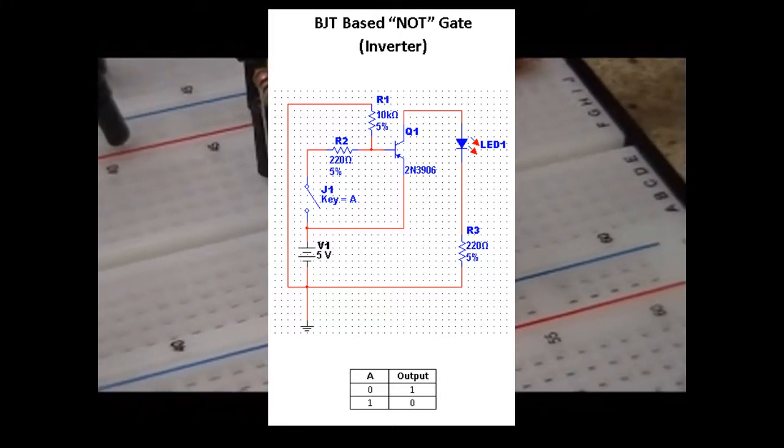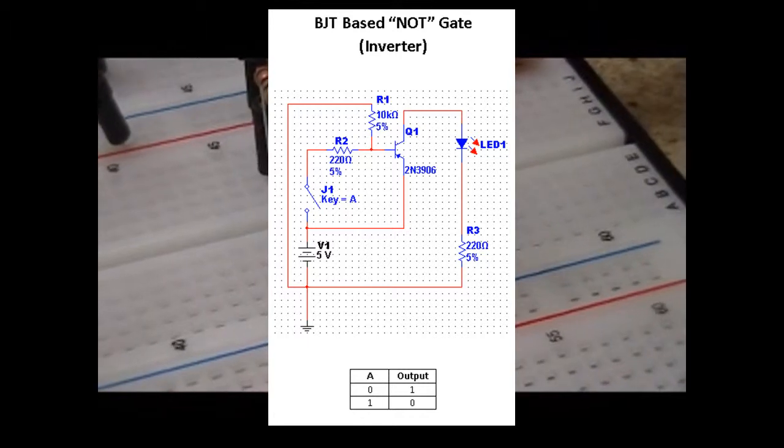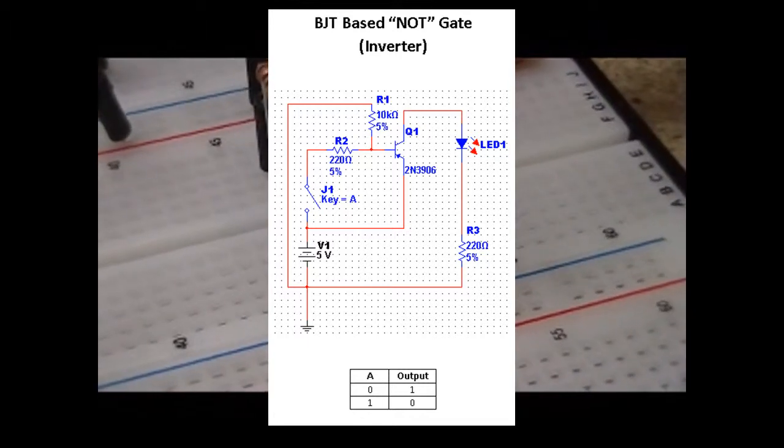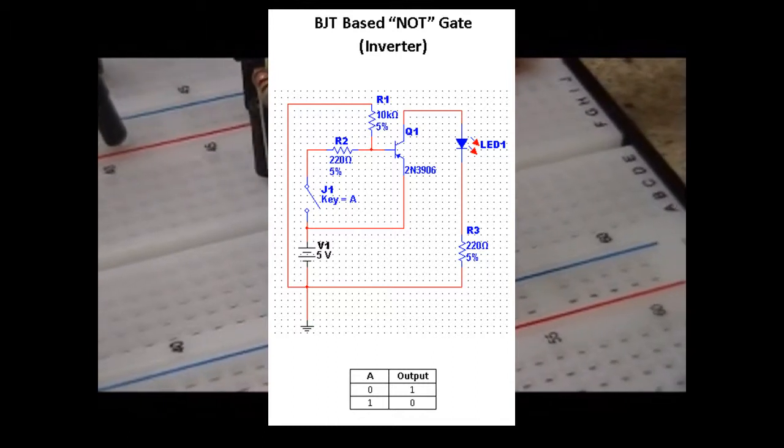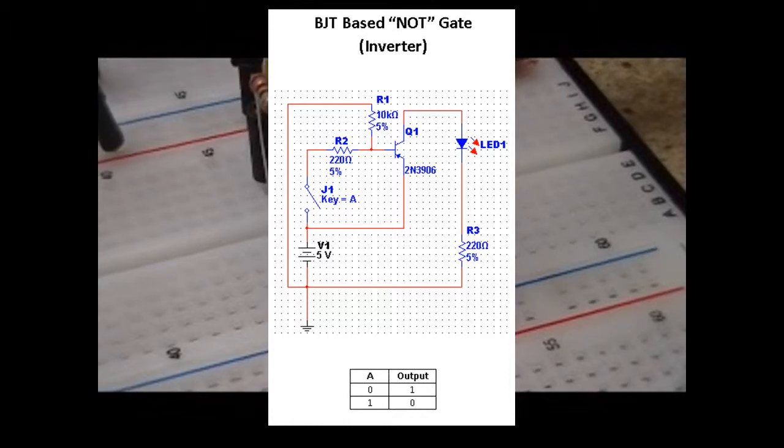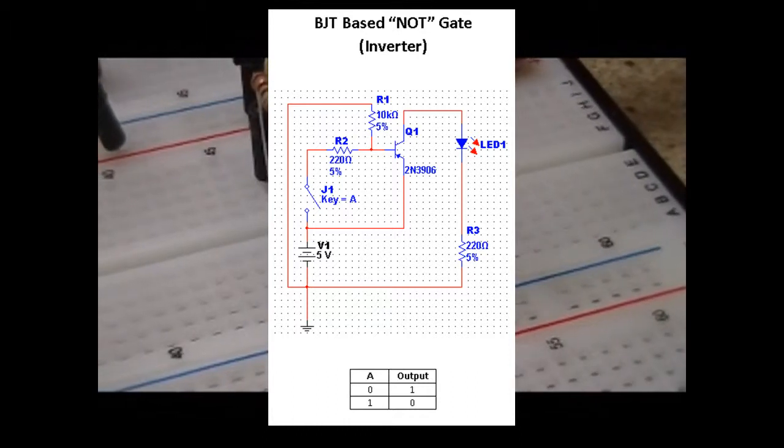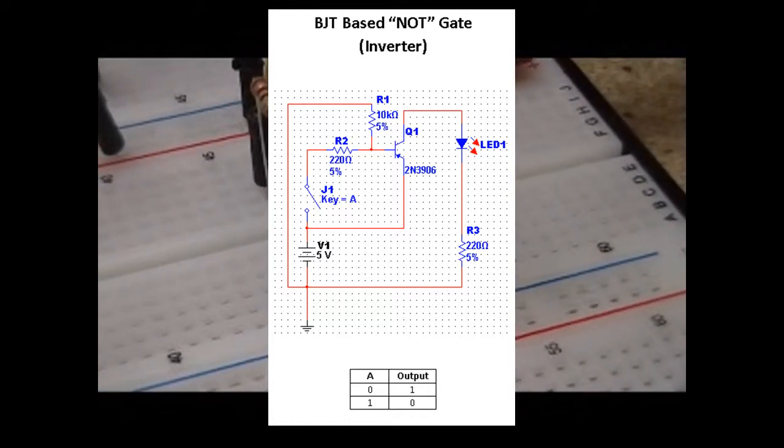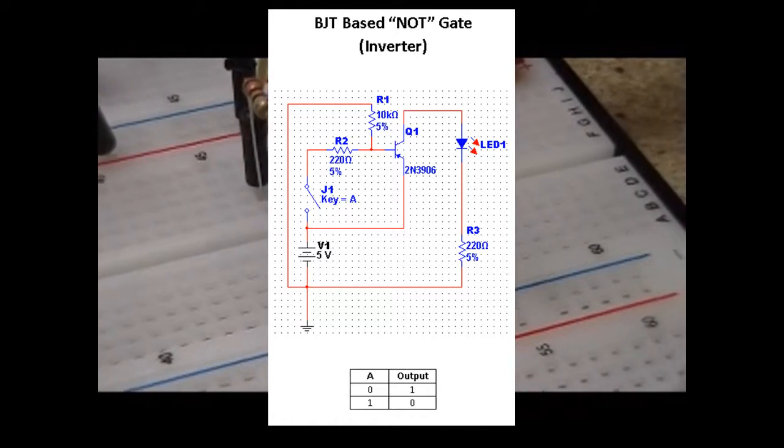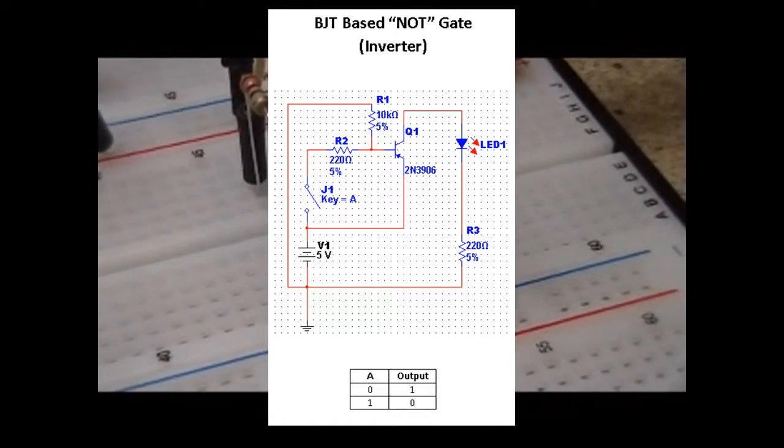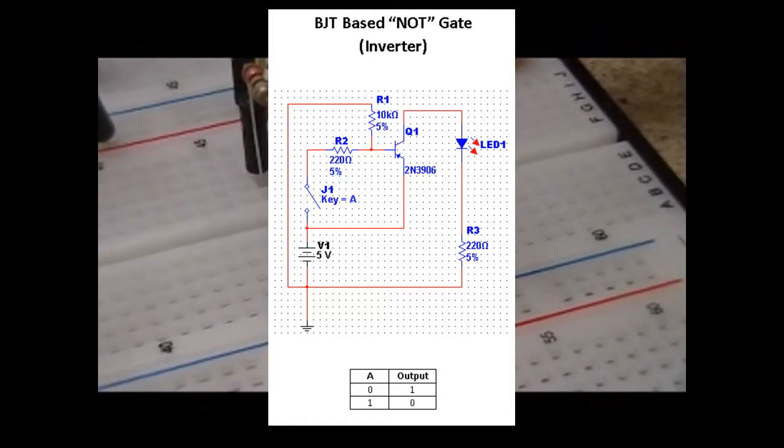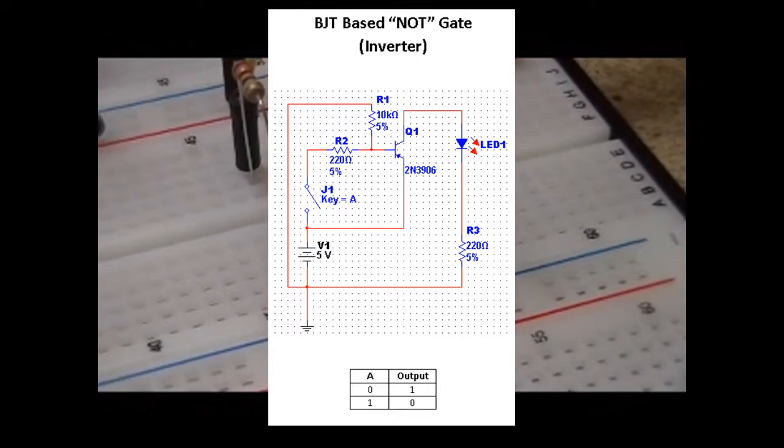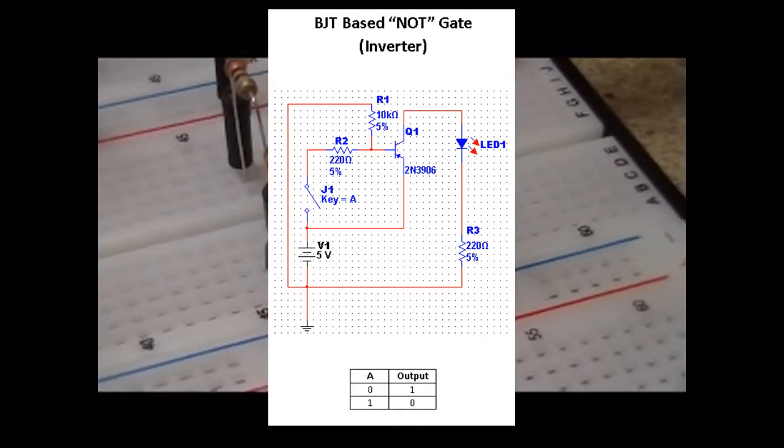The way this circuit actually works, if you look at it, is when the switch is open, there is no current flowing through the 220 ohm resistor. It's basically floating. So the base of the transistor actually sees a negative potential through the 10k ohm resistor. It basically sees ground. Therefore, the transistor is in active mode.